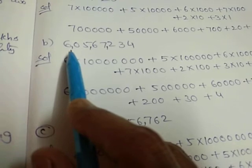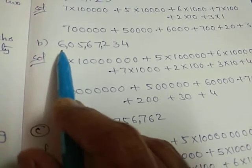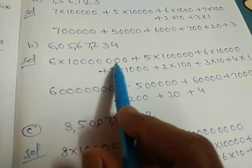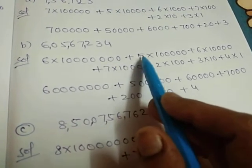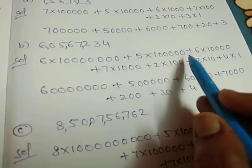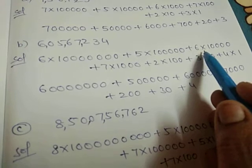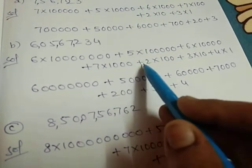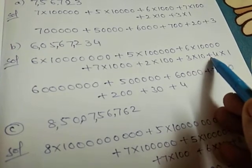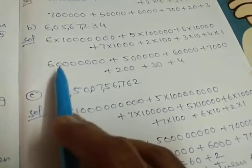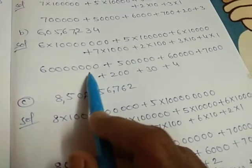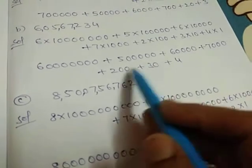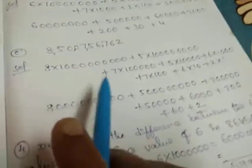Second number: 6 is in the crore position. So 6 × 1,00,00,000 (crore has 7 zeros), plus 5 × 1,00,000 (lakhs), plus 6 × 10,000, plus 7 × 1,000, plus 2 × 100, plus 3 × 10, plus 4 × 1. Multiplying: 6 crore + 5 lakhs + 60,000 + 7,000 + 200 + 30 + 4.